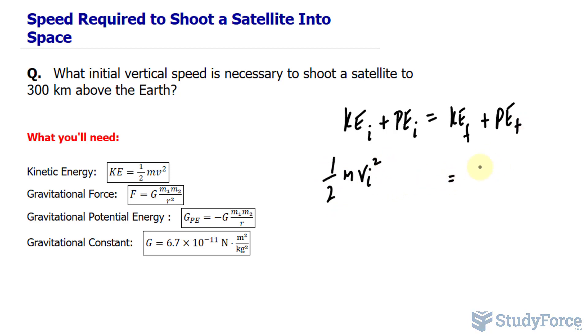We have half the mass times the initial velocity to the power of 2. And on the right side, it's the same thing, mass times velocity to the power of 2 final. The expression for potential energy is shown right here. And again, in that previous video, I explained why it's negative.